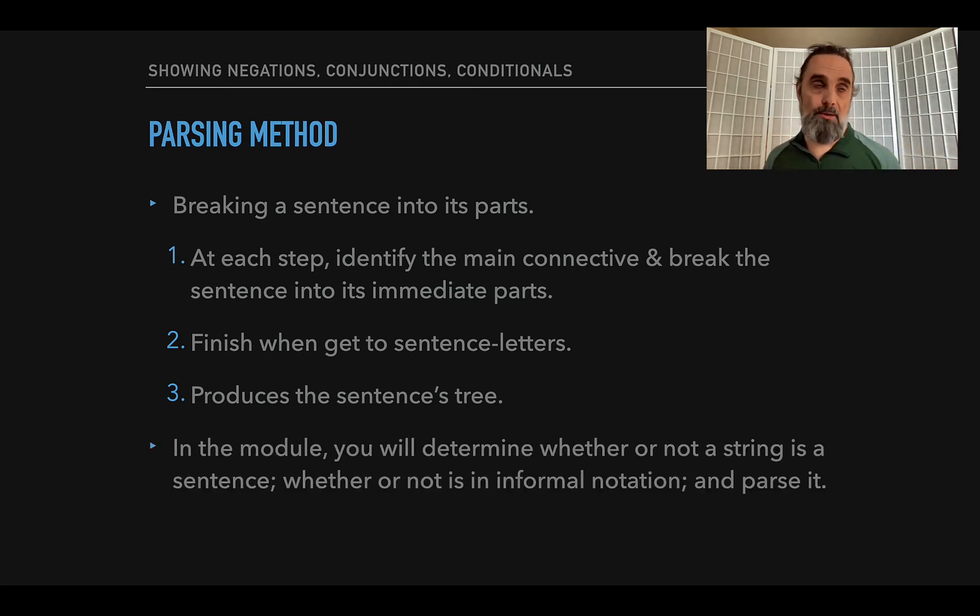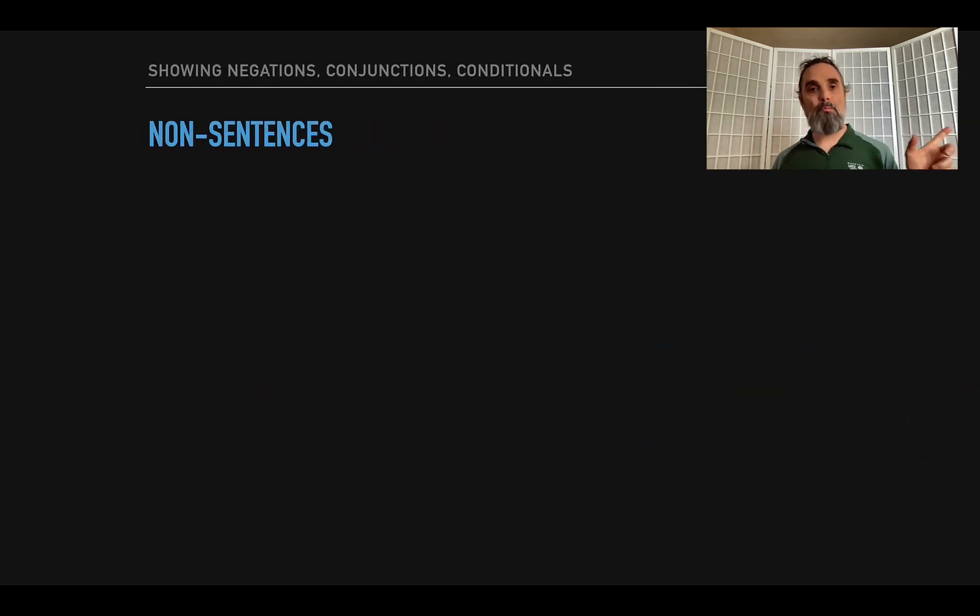So there's a parsing module in the program, and what's going to happen is you're going to be given a string, just some symbols in a row, and you have to figure out: is it a sentence in official notation? Is it a sentence in informal notation? Or is it not a sentence at all? Is it not well-formed? And if it's a sentence in official or informal notation, then you will produce the parsing tree for it.